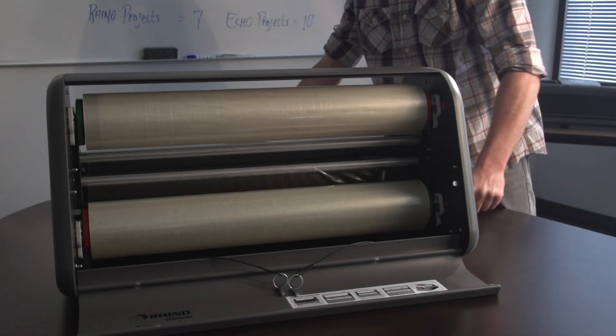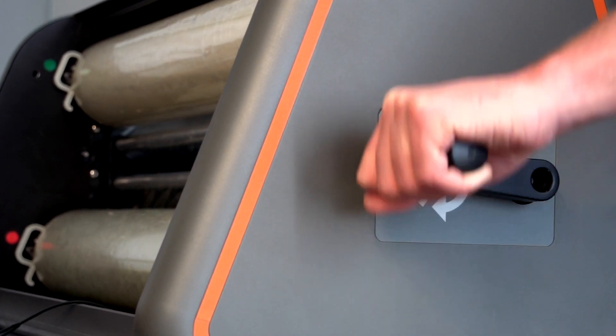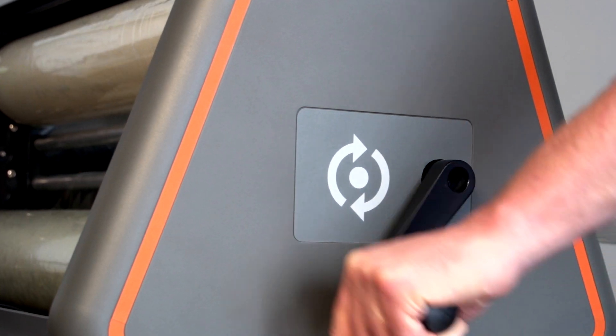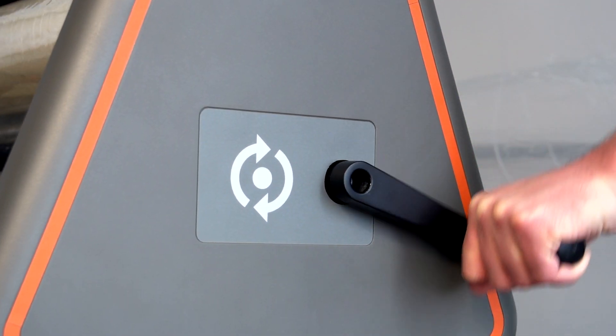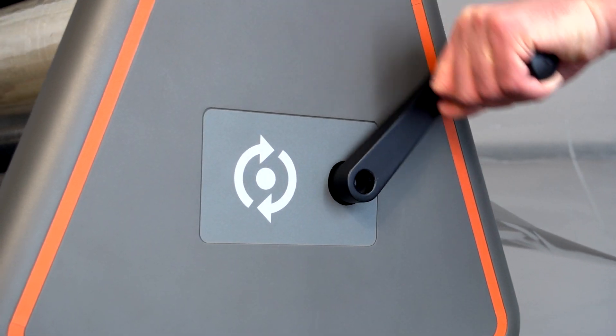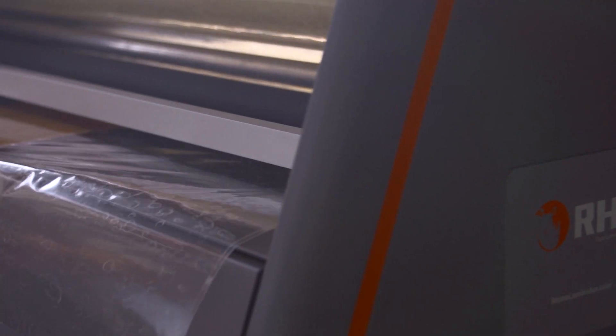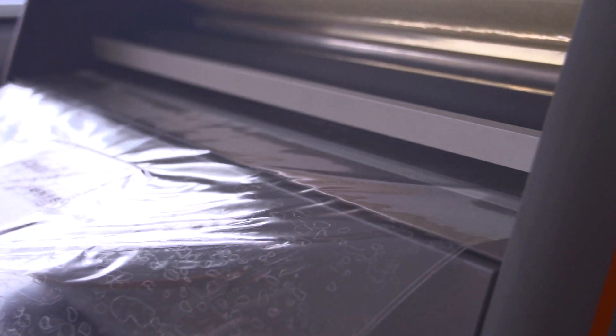Finally, slowly turn the crank clockwise and make sure the laminate film is feeding out of the back of the system correctly. Rhino will help to even out any wrinkles in the supply, but this may take a few feet of material. Running a small piece of cardboard through Rhino can often help speed up the process.